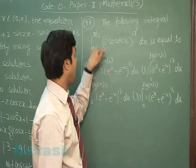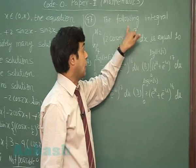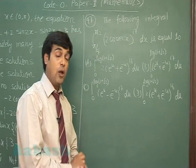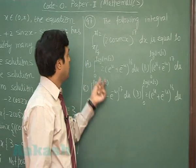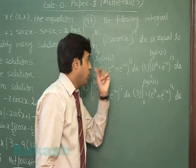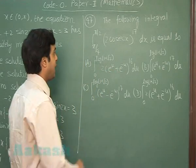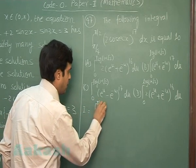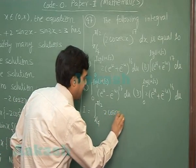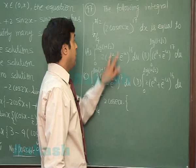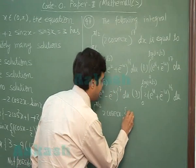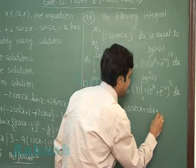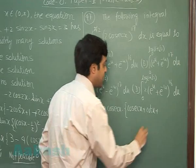Question 47: evaluate the integral ∫(π/4 to π/2) (2cosx)^17 dx. Options are given in the form of an integral involving e^u + e^(−u). Let's rewrite the given integral: (2cosx)^17 = (2cosx) · (2cosx) · ... · (2cosx), splitting the terms as cosx + cosx + cosx + cosx − cosx.